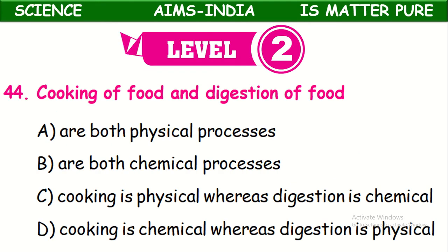Now we move to level two questions. First: Cooking of food and digestion of food — what kind of changes are these? In both, chemical change occurs. These are changes in which the chemical composition of substances changes, and both are completely irreversible changes. So these two are chemical processes.